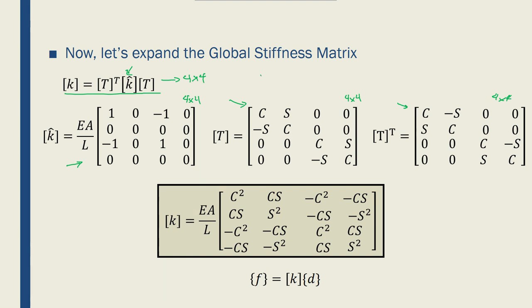Now let's take a look at what we got here. We have two nodes per element. And in the global coordinate system, we have two degrees of freedom per element.